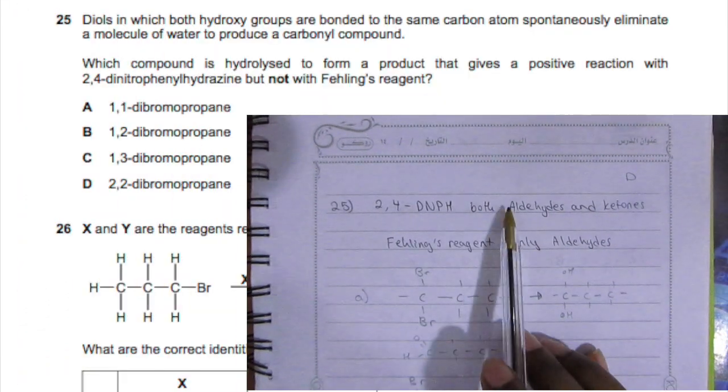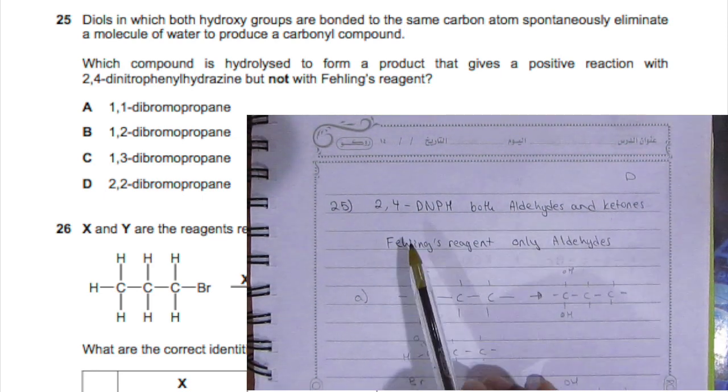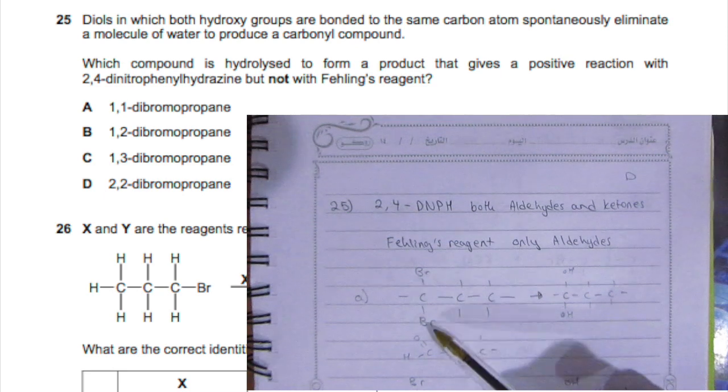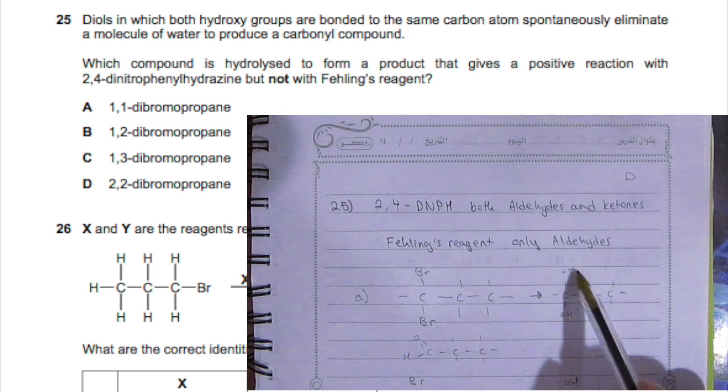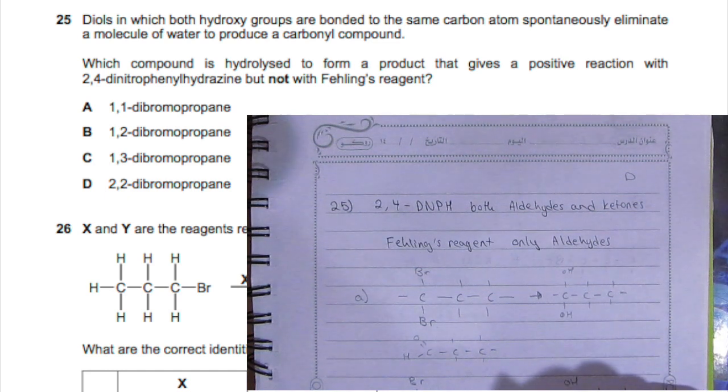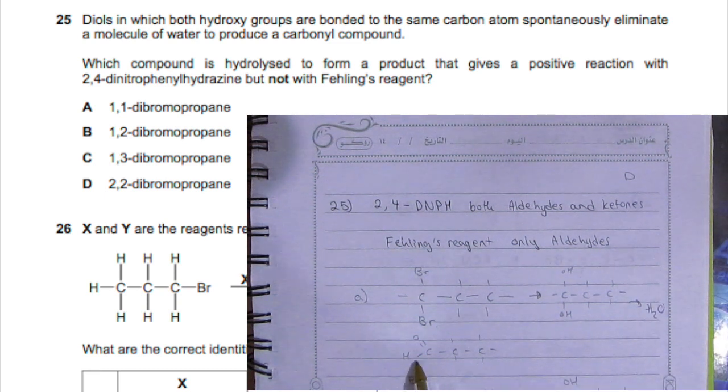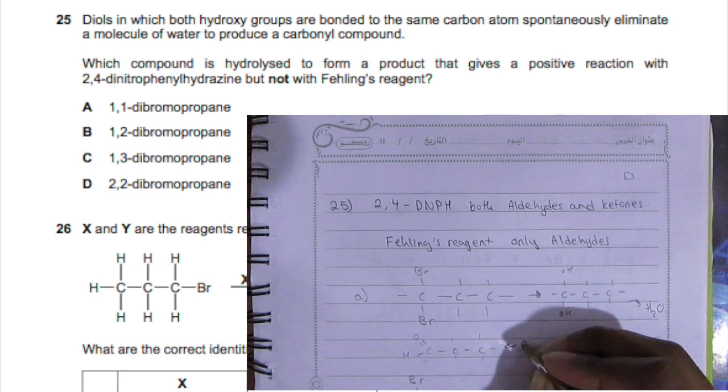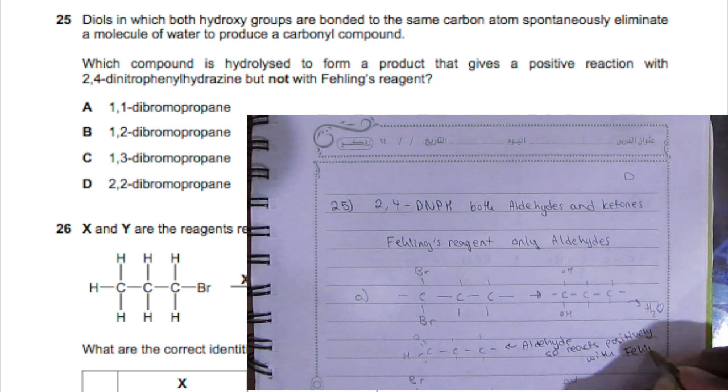Okay, so 2,4-D and pH both dehydrate both aldehydes and ketones, and the Fehling's reagent can test only aldehydes. For the first part, Br and Br - when you hydrolyze you get OH and OH. Like they told us in the question, if they're on top of each other they spontaneously eliminate a water molecule. So a water molecule goes out, so you end up with this. This of course is an aldehyde, and of course aldehydes react with Fehling's reagent positively.